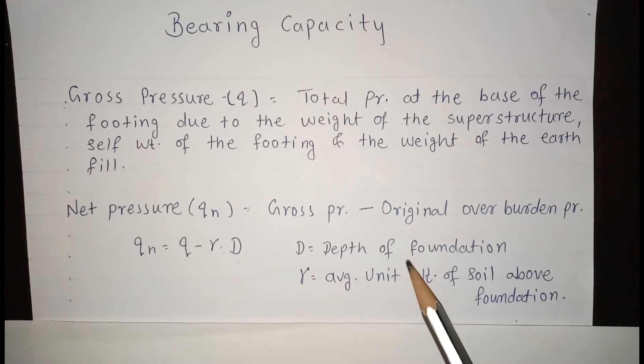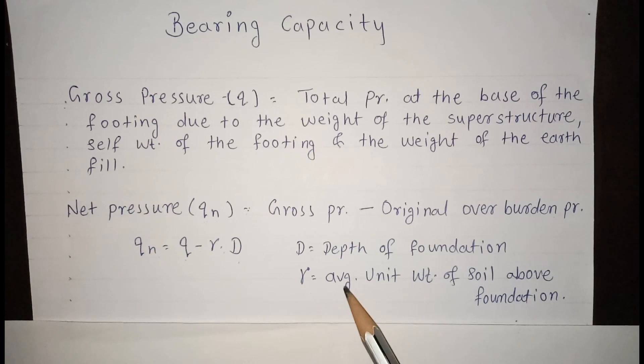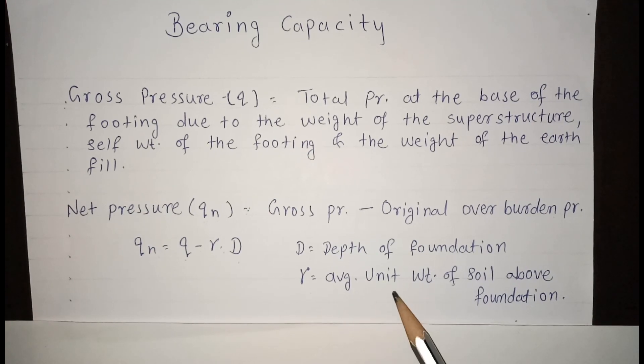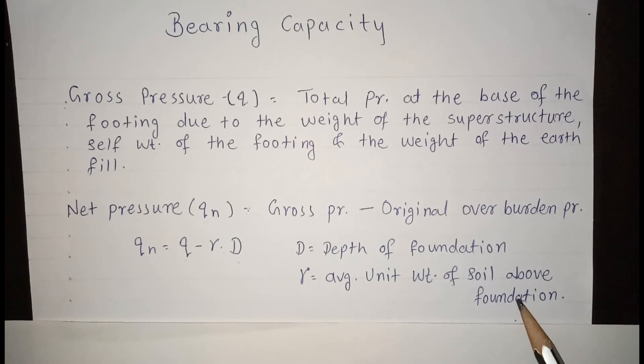D is the depth of the foundation, and γ is the average unit weight of soil above the foundation.